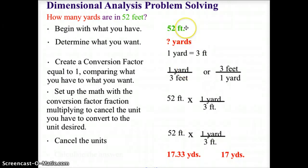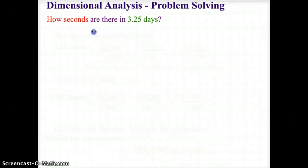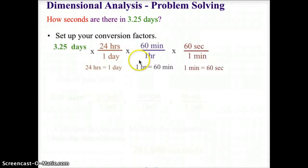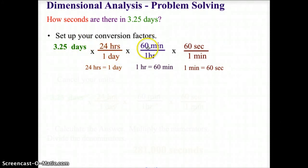For our second problem, we're going to find how many seconds are in 3.25 days. We'll set up our conversion factors as before. We start with 3.25 days, then 24 hours for every one day — putting one day in the denominator because that's the unit we're going to cancel — and 60 minutes in every hour, because we need to cancel hours.